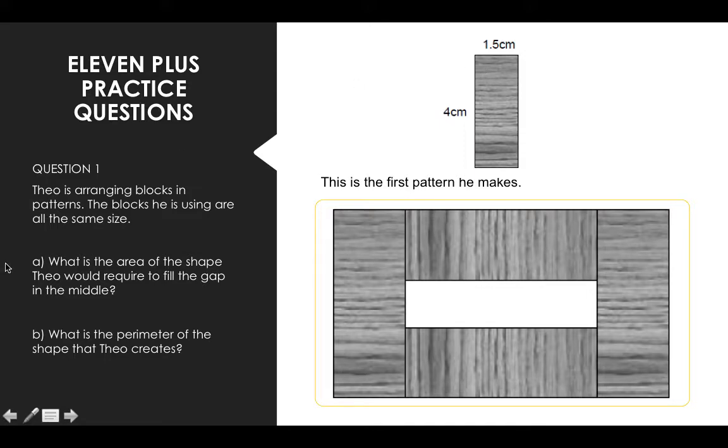Question 1a, what is the area of the shape Theo would require to fill the gap in the middle? This is the gap in the middle so you need to work out the area. The second part of this question is what is the perimeter of the shape that Theo has created? This question is referring to these bits here. You can pause the video, jot down some notes and keep your answer and then we can go through the answers at the end.